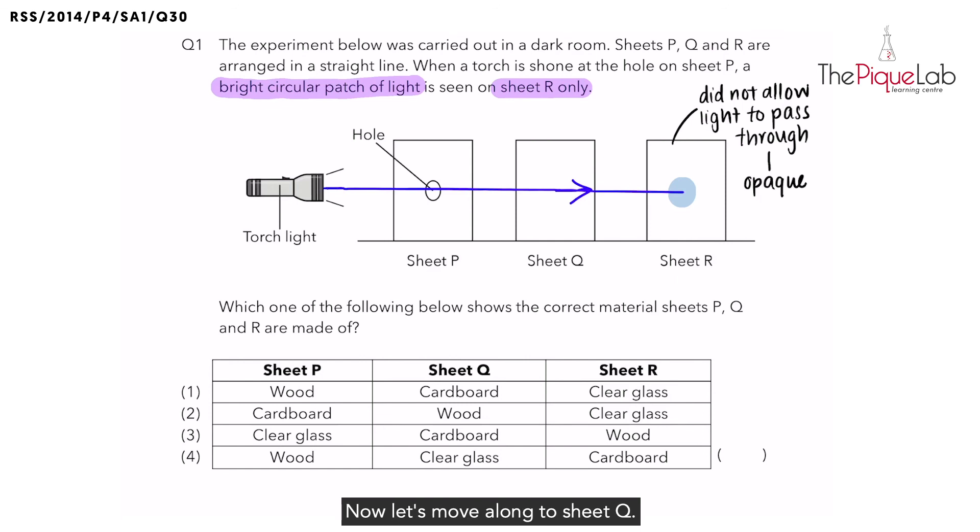Now let's move along to sheet Q. Remember, on sheet R, we were able to see a bright patch of light. Since we were able to see a bright patch of light on R, that means sheet Q must have allowed most light to pass through. What can you conclude about a material that allows most light to pass through? We call that a transparent material. That means Q must be transparent.